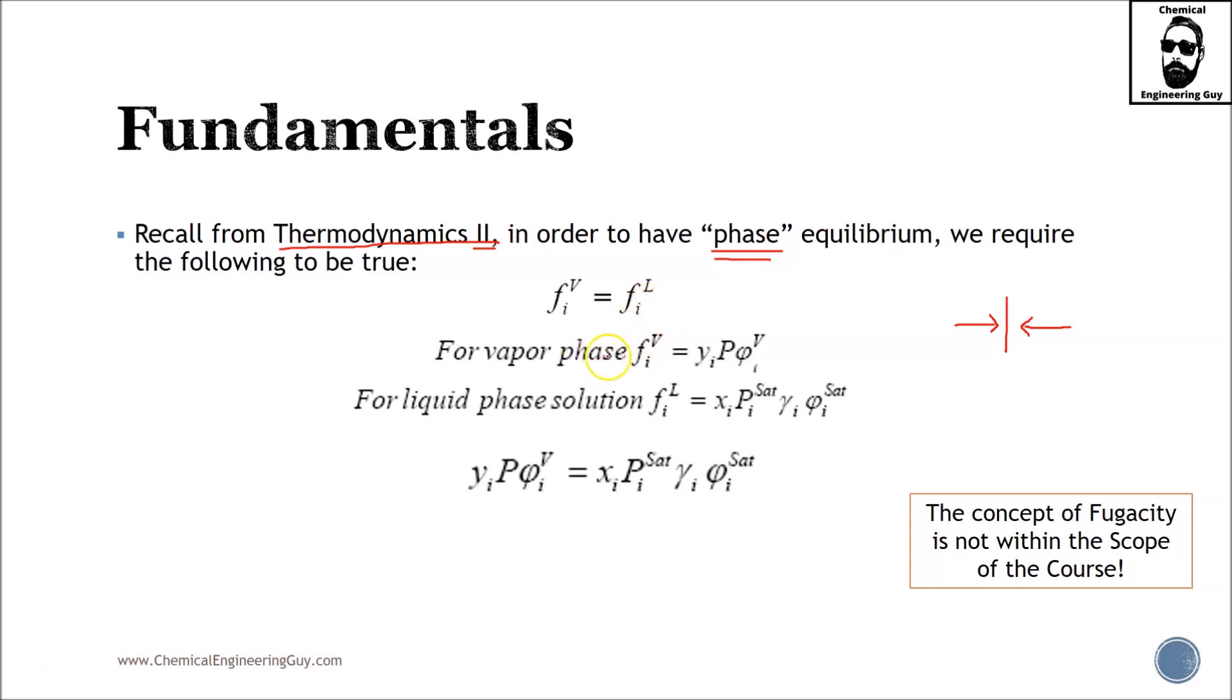But let us assume for now that fugacity can be modeled as follows. For the vapor phase, let it be species I, can be described as the molar composition of I in the vapor phase, which will be y.